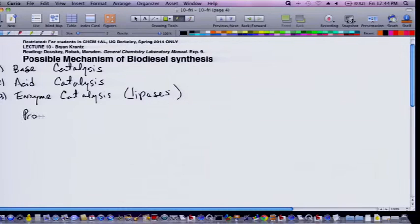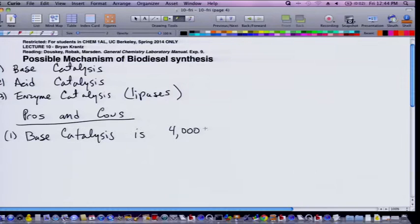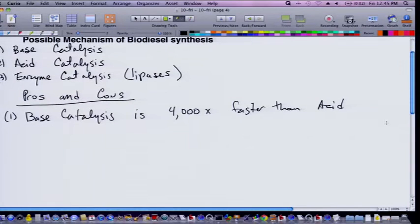So you might say, what are the pros and cons of these mechanisms? Let's assume that all of them work, which they all do. It turns out that the big pro for base catalysis is that base catalysis is 4,000 times faster than acid. Now, I'm not going to give you any relative pros and cons here for the enzyme method, because I didn't look into it too carefully. I can't tell you in terms of speed whether enzyme is faster.